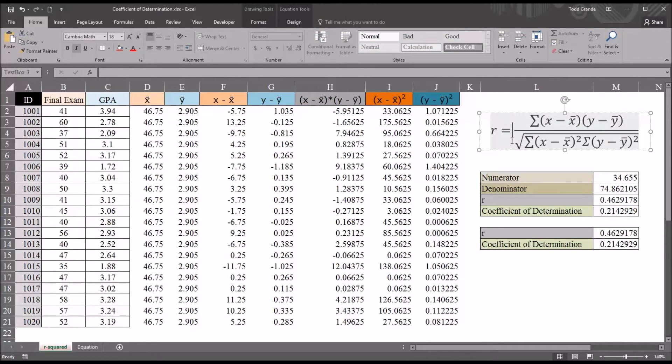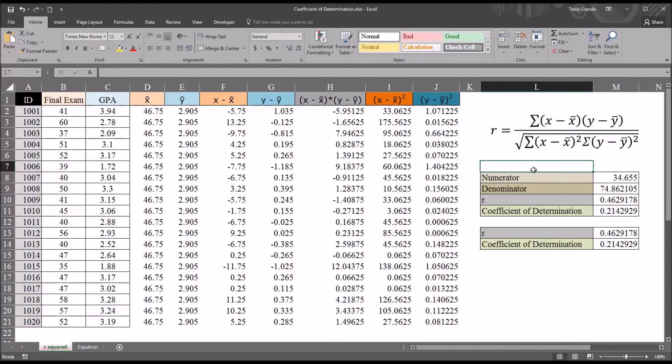And you can see that if I click into this object on this equation, this can be modified in Excel. So I'm going to show you how to use the ink equation feature to build an equation, and specifically I'm going to build this equation for the correlation coefficient.